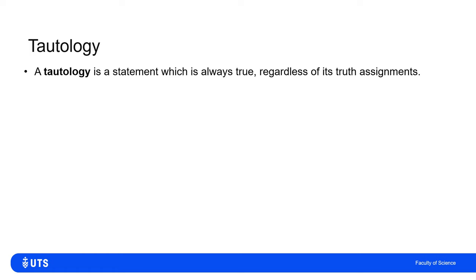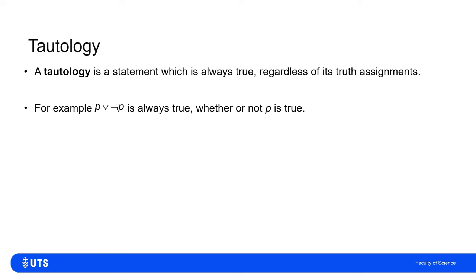We say that a statement is a tautology if it is always true, no matter what truth or otherwise is assumed about parts of it. For example, P or not P is always true. Because either P is true, so P or not P is therefore true, or P is false, in which case not P is true, so P or not P is true. There is no way to make the statement 'P is true or P is not true' not true.